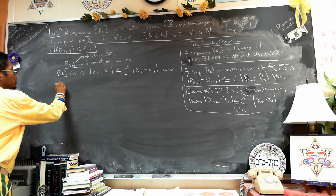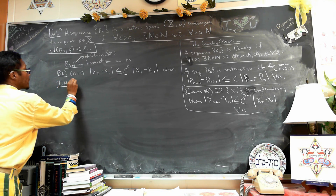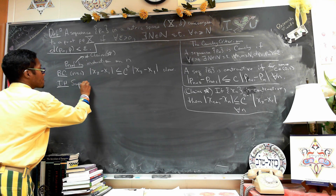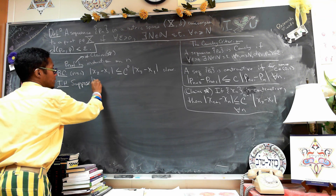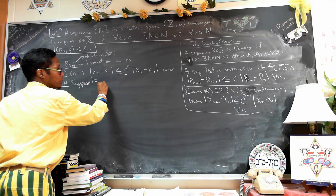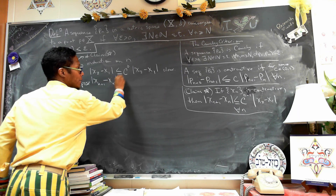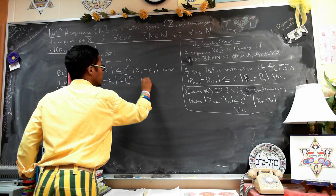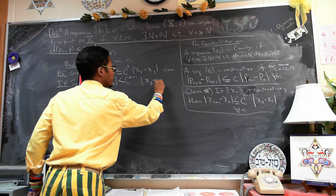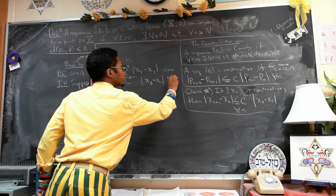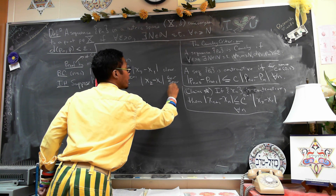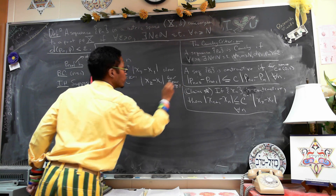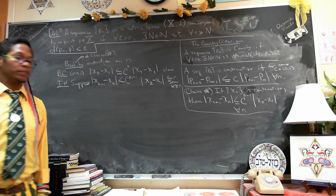Induction hypothesis: suppose x_{k+1} minus x_k is less than or equal to c^{k-1} times x_2 minus x_1, for some k greater than or equal to the base case.